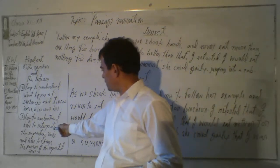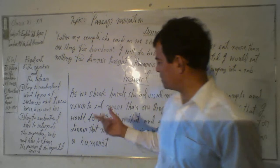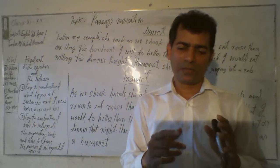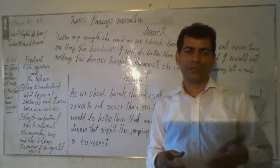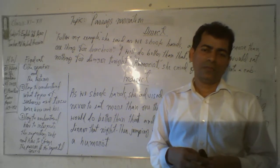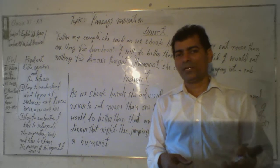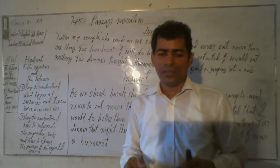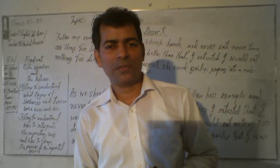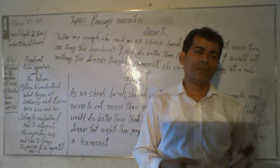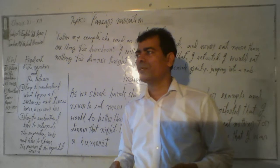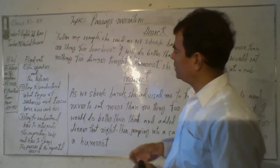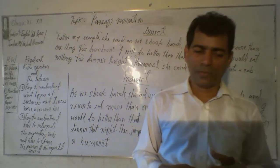Try to understand how to change the person of the reported speech. According to the rule, if the subject of the reported speech is first person, it changes according to the subject of the reporting verb when you change the speech from direct to indirect form. When the subject of the reported speech is second person, it changes according to the object of the reporting verb. And if the subject of the reported speech is third person, it doesn't change. We have discussed all these things in my prior classes.